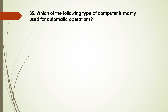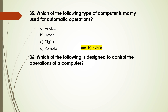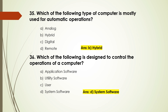Question number 35: Which of the following type of computer is mostly used for automatic operations? Options are: analog, hybrid, digital, remote. The answer is B, hybrid. Question number 36: Which of the following is designed to control the operations of a computer? Options are: application software, utility software, user, system software. The answer is D, system software.